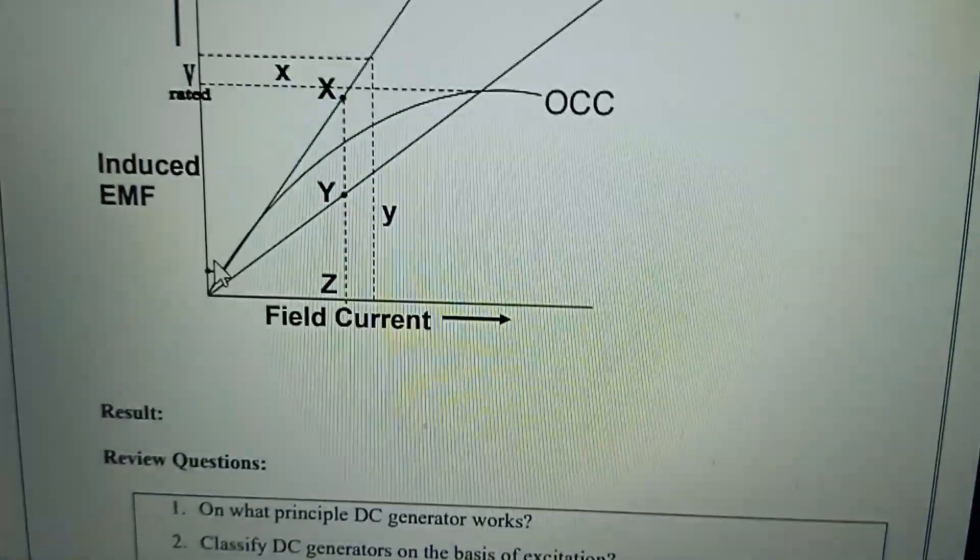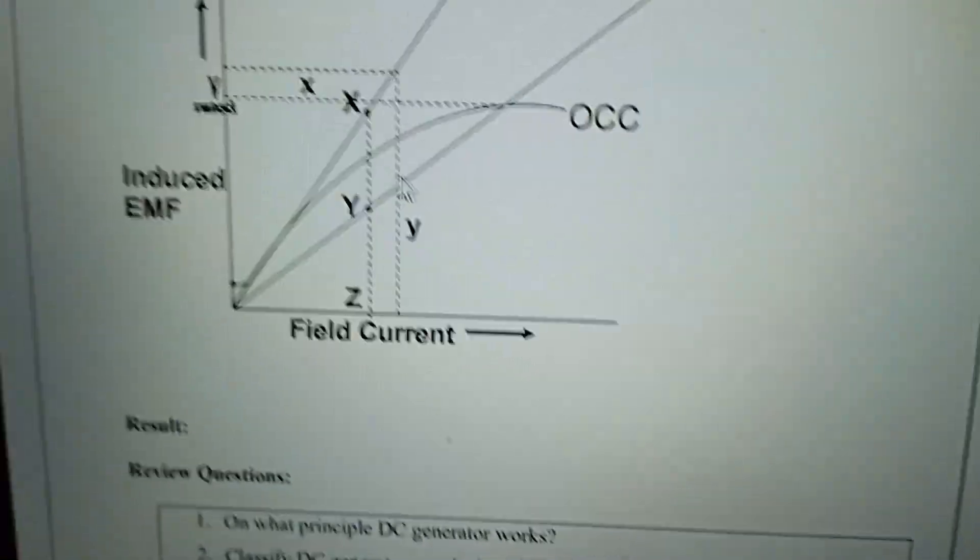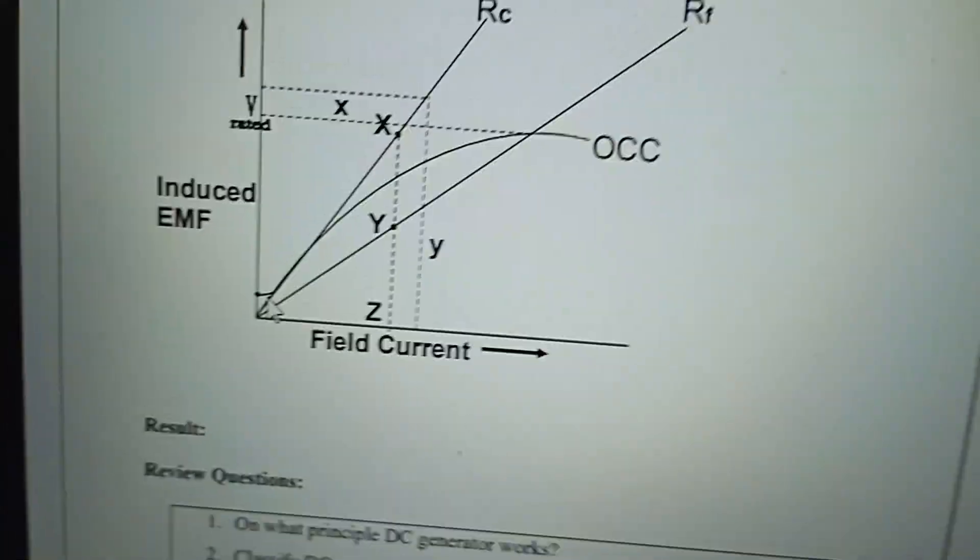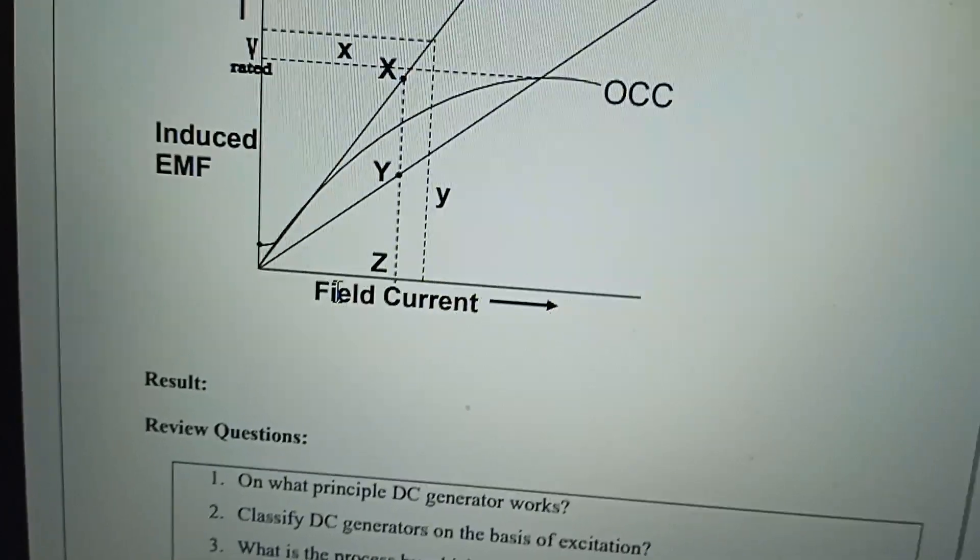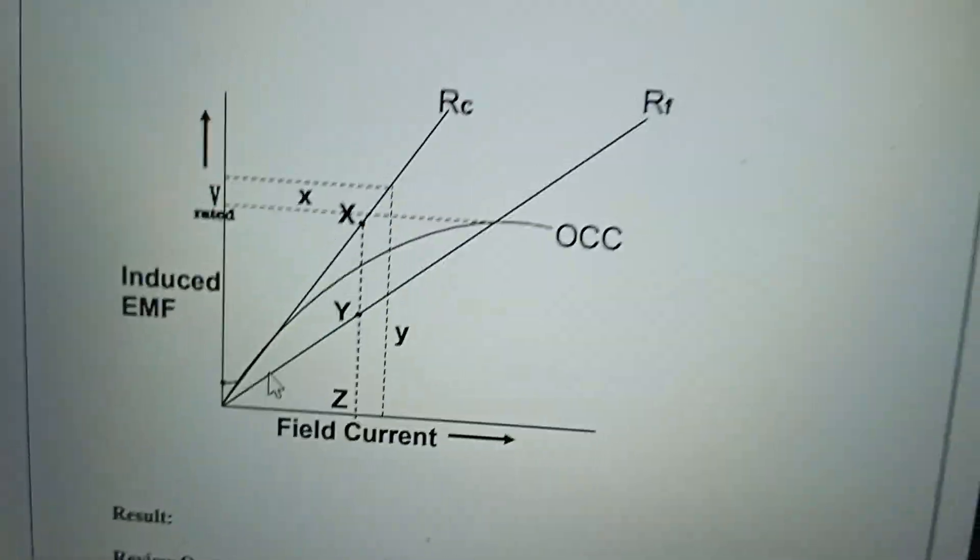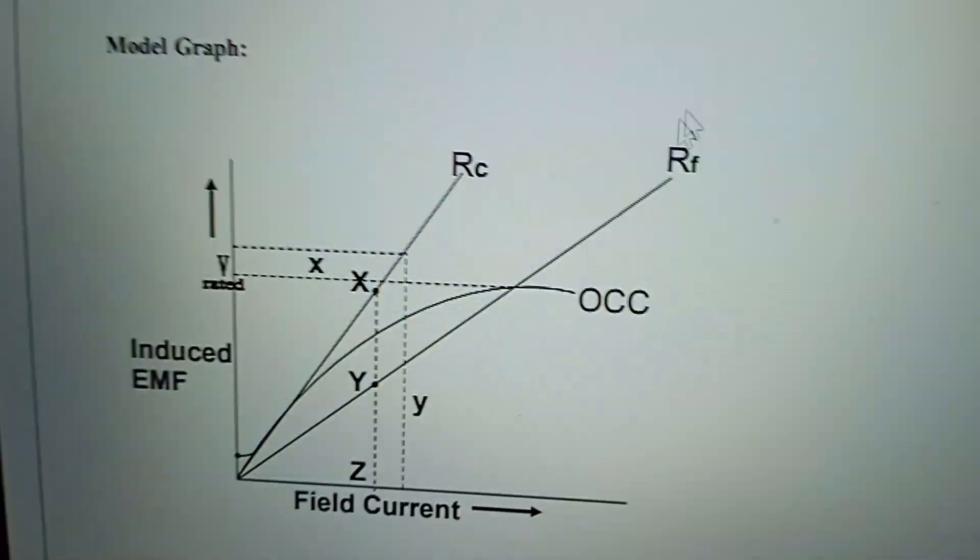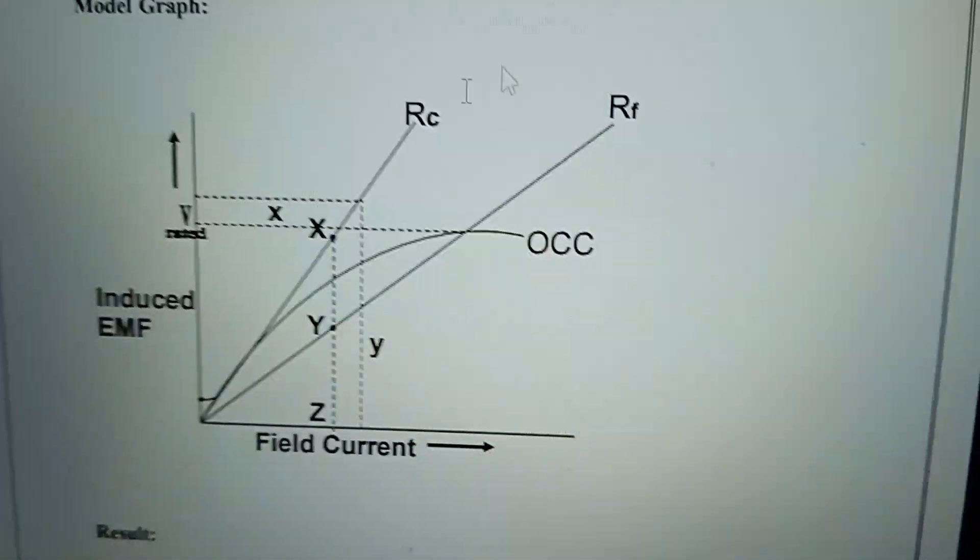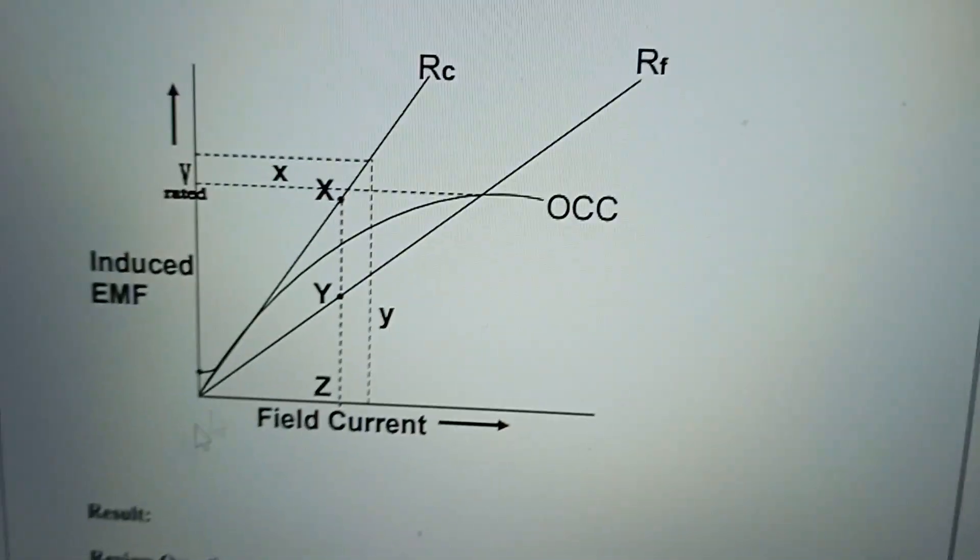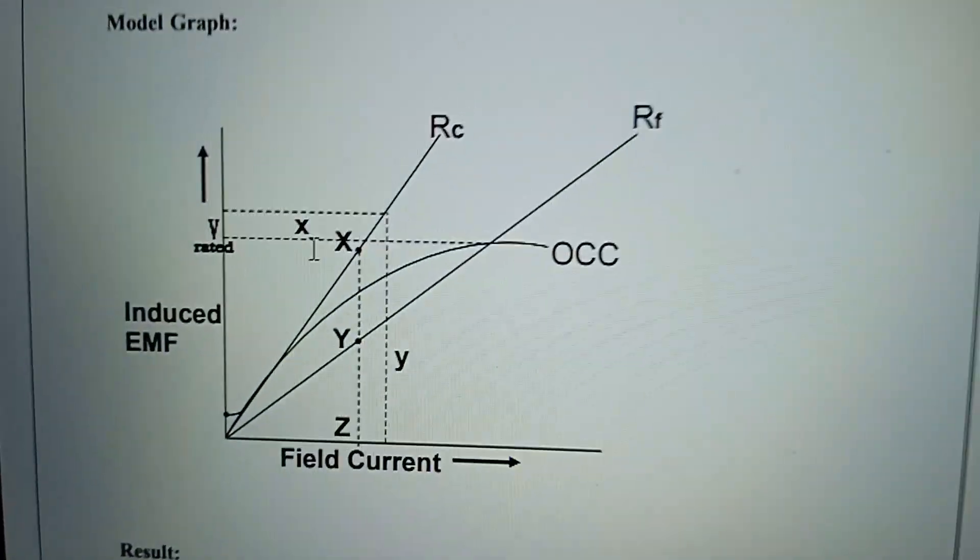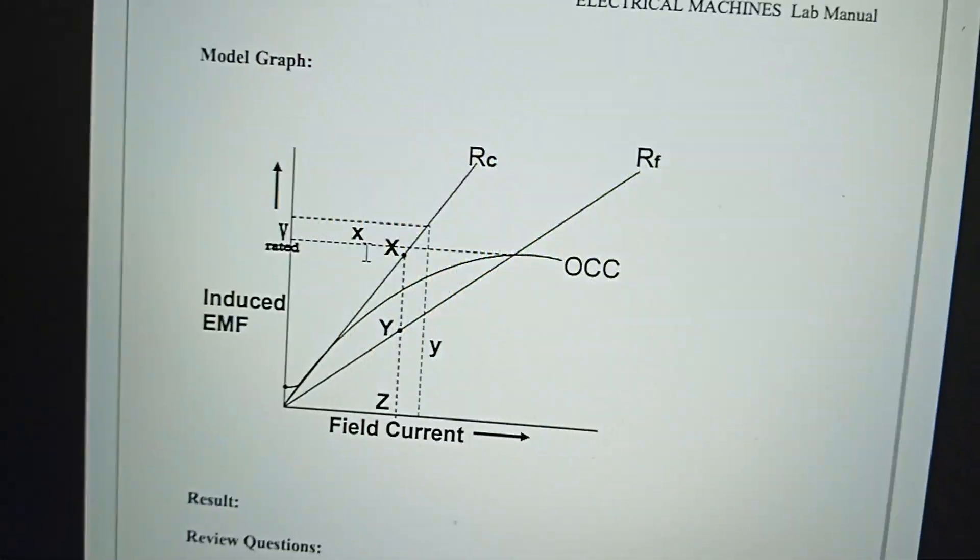This jump is needed to start. This is the residual magnetism. When the field poles have residual magnetism, critical resistance can be drawn. This is field resistance, the RC critical resistance. When field resistance is at the minimum resistance, we respond.